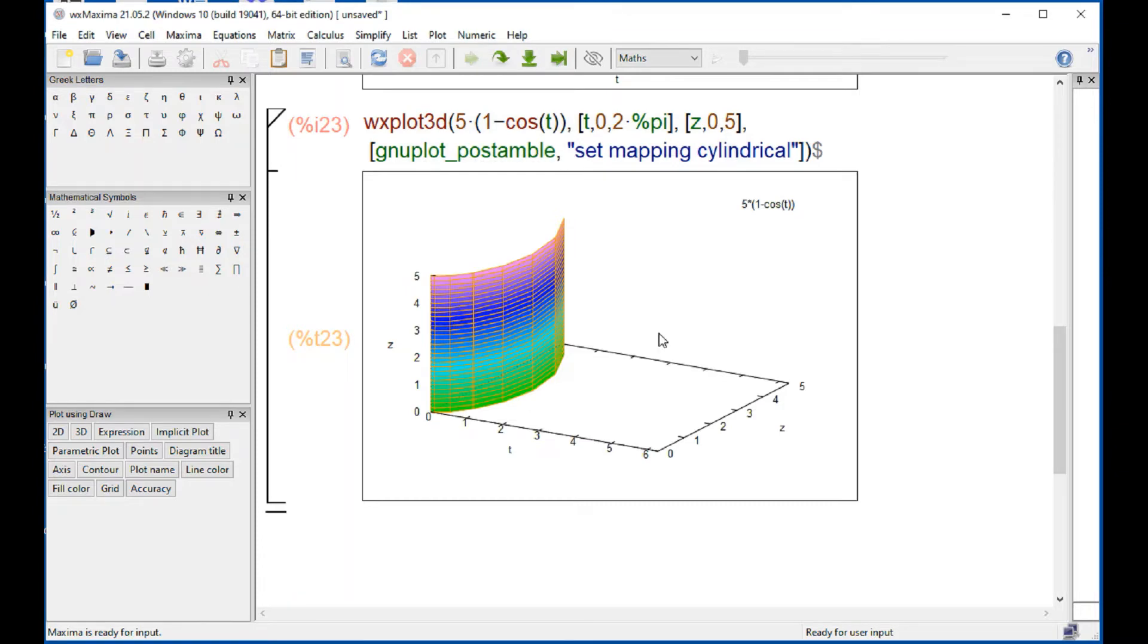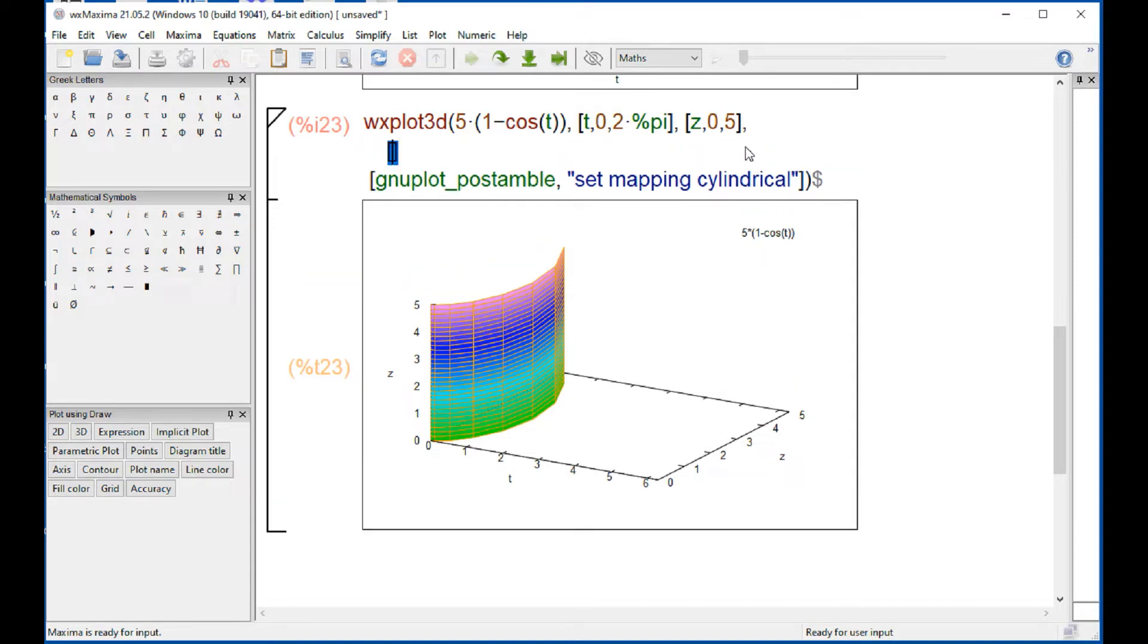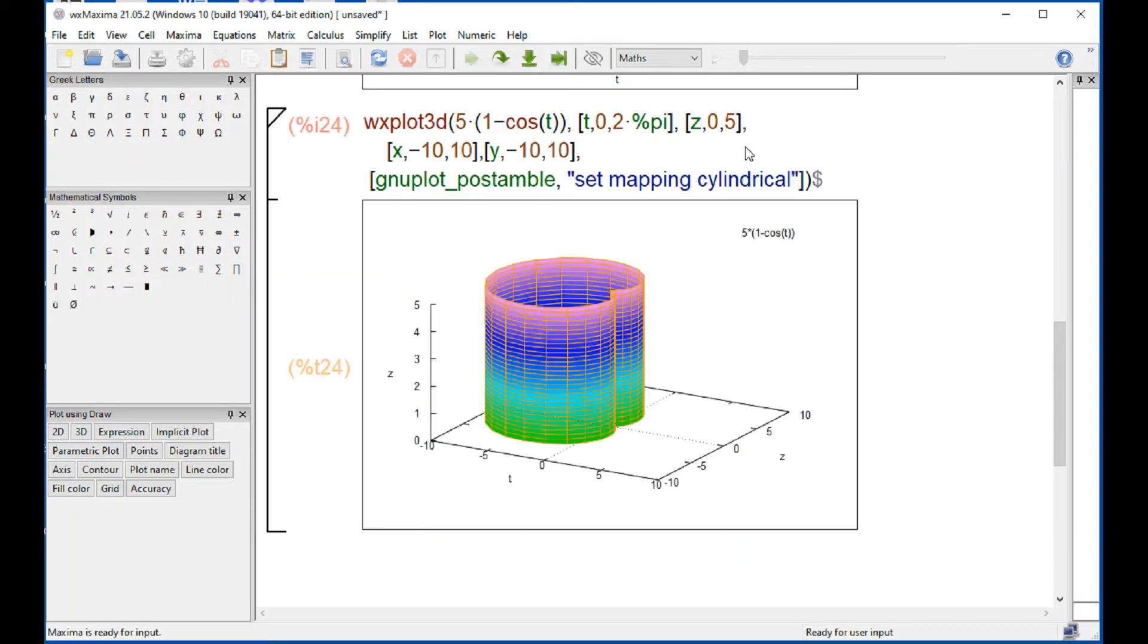We get something there, but that's not correct. We need to specify the coordinates for the extent of x and y. I'm going to put an enter here and put a comma right here. When I do shift enter, then now it looks more like the cardioid, which is the limit of this cylinder, and the z direction is constant.